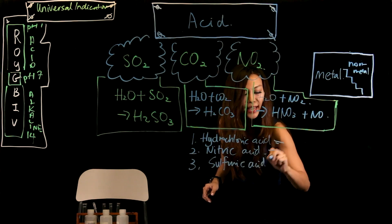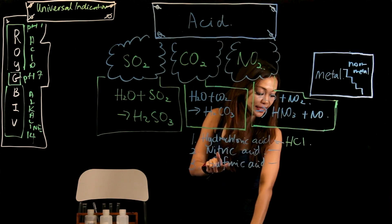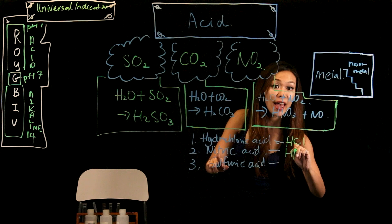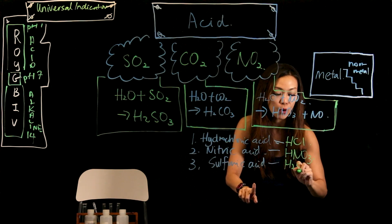So, what exactly are their formula? Now, hydrochloric acid is HCl. Nitric acid is what? HNO3. Sulfuric acid is H2SO4.